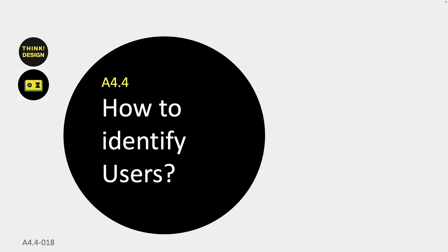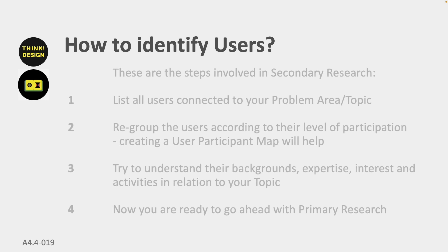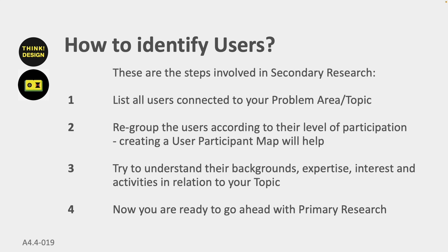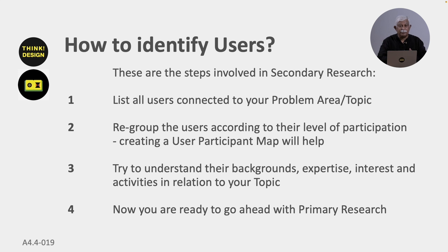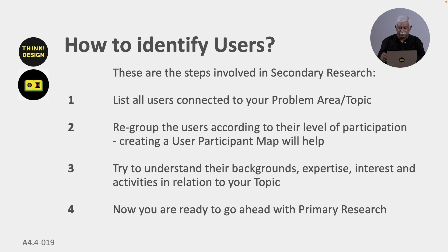Here are the steps involved in identifying users. First, list all the users connected with your problem area or topic. Then regroup them according to level of participation — primary to quaternary. Understand their background, expertise, interest, and activities in relation to your topic. Once you have this, you are ready to proceed to the next section, which is primary research.